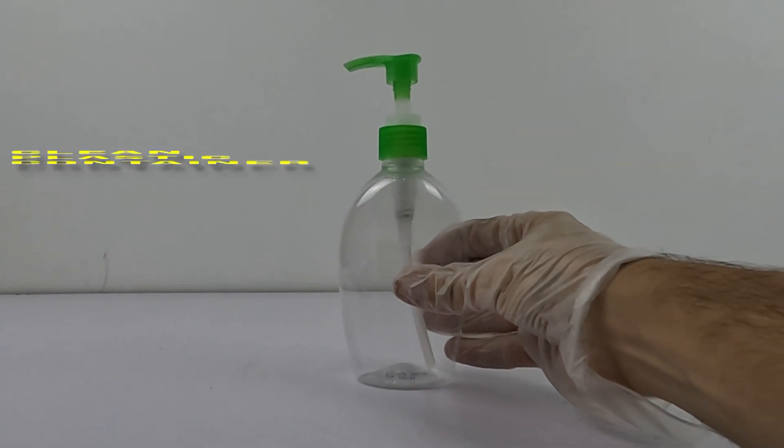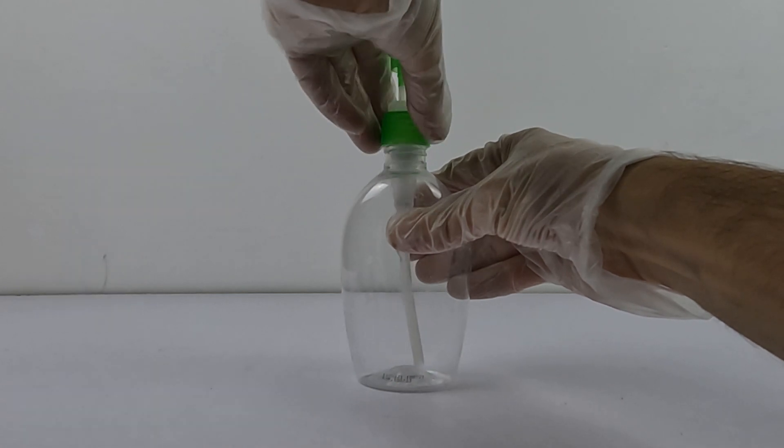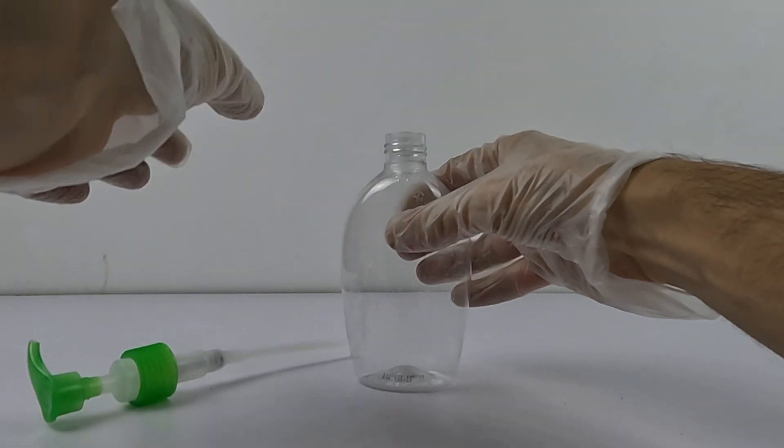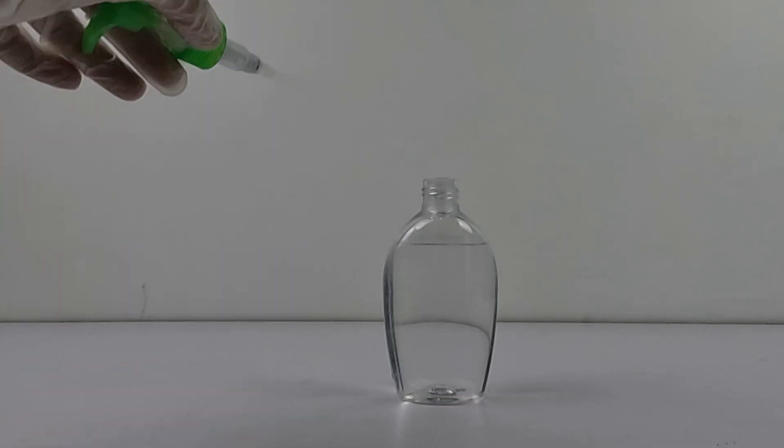After mixing, take a clean plastic container that can hold 250ml and pour the solution into the container through the funnel so it doesn't get spilled. Close the container tightly and label it.